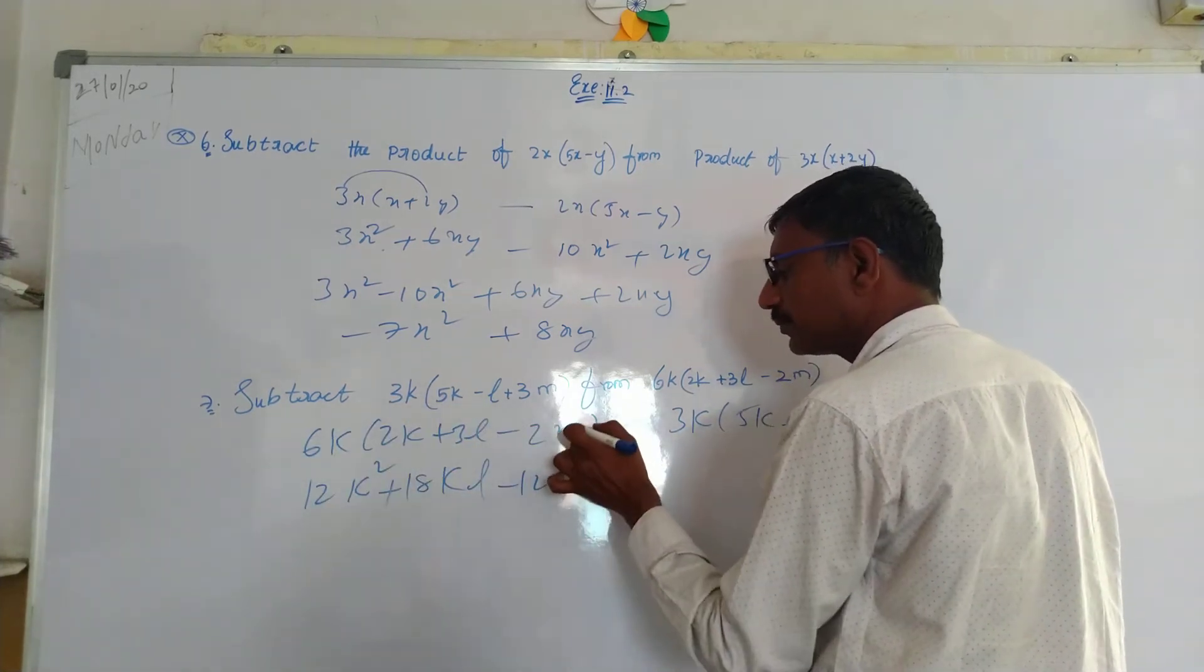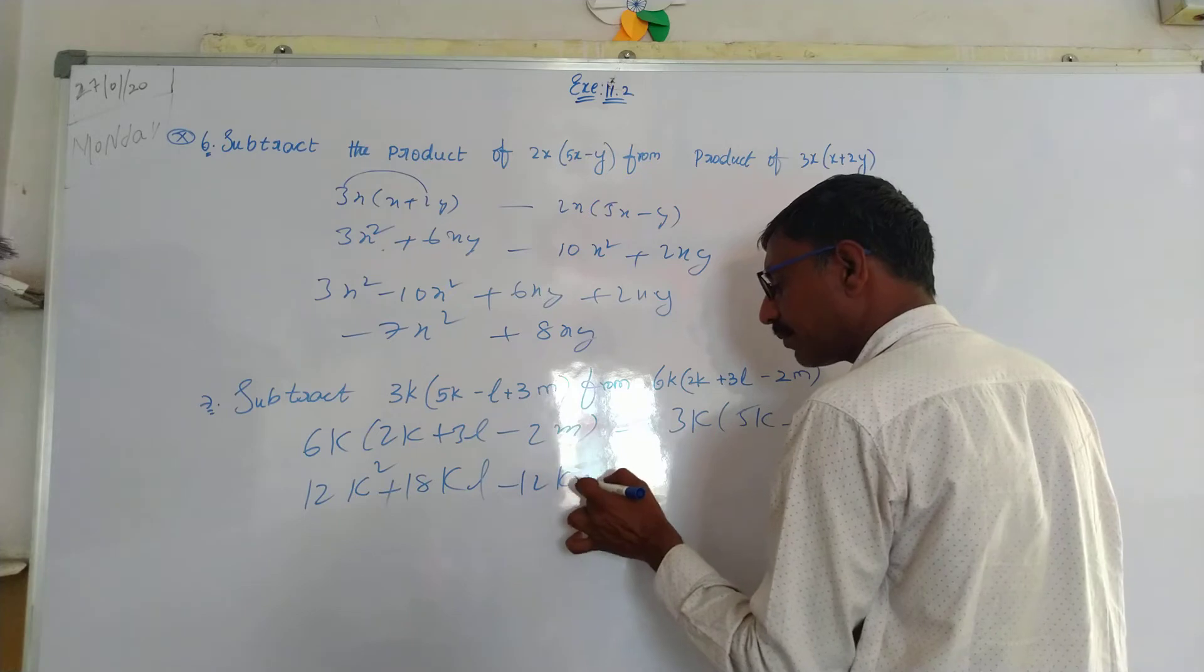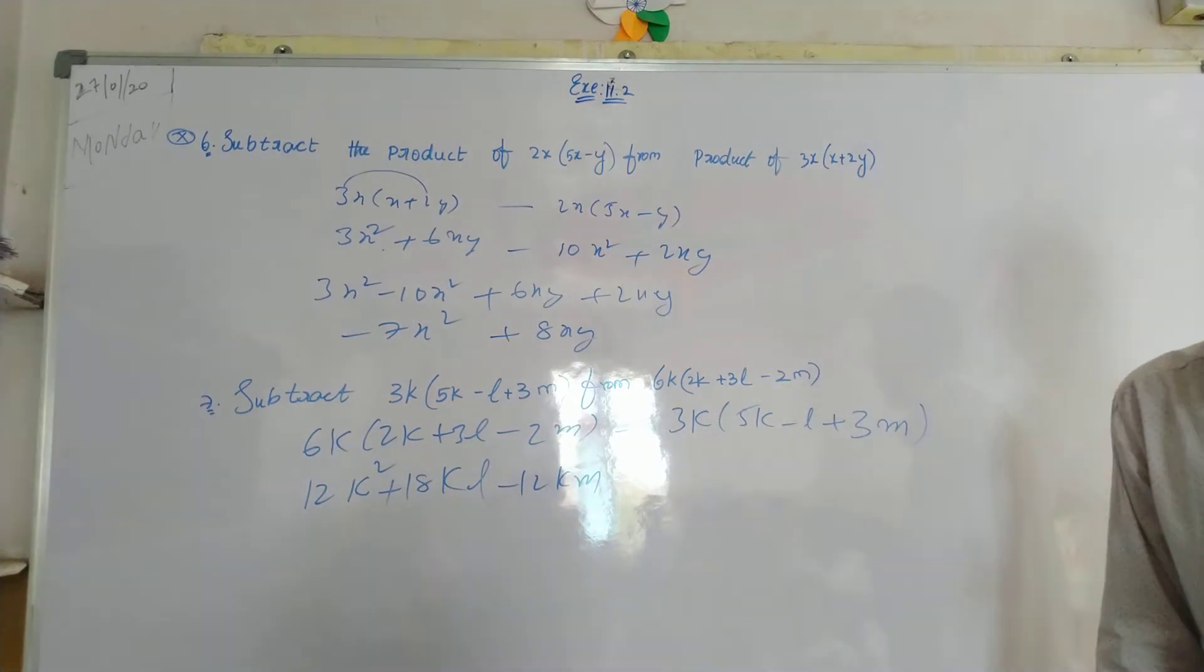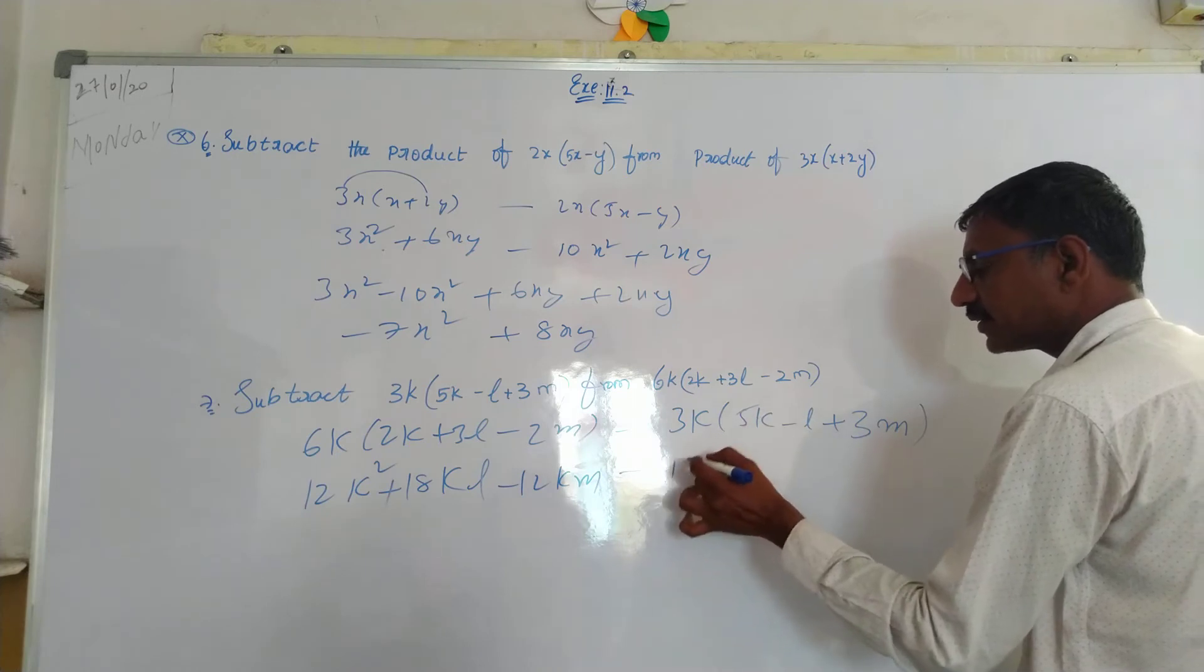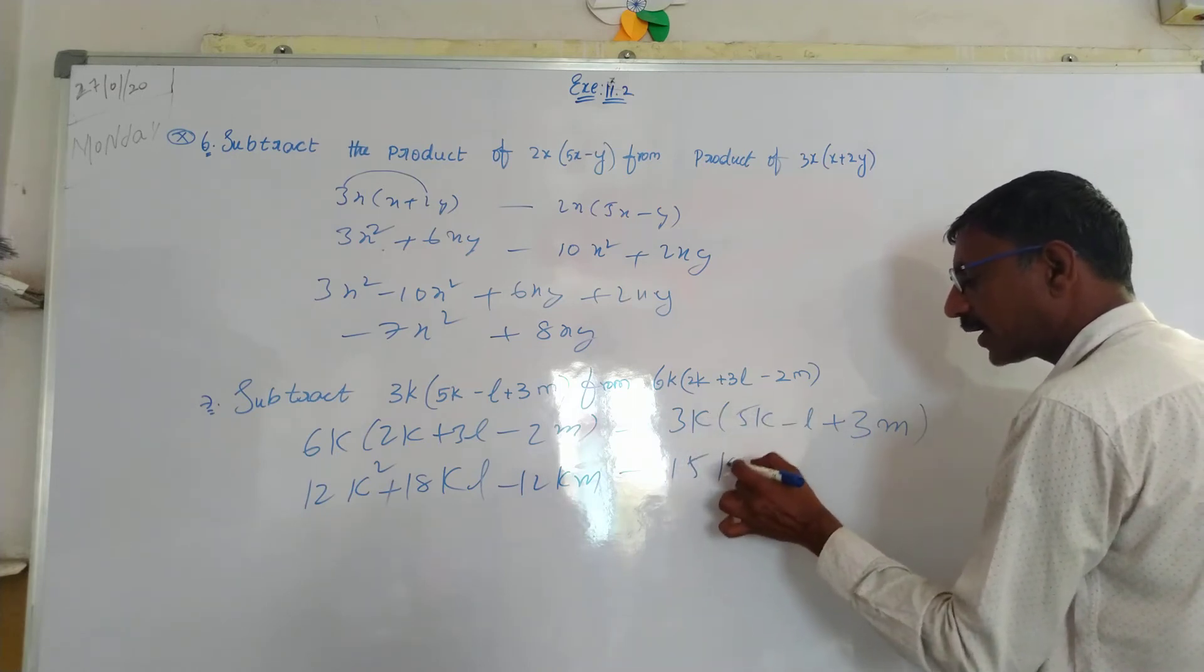12KM. Minus, 3 times 5 is 15, K into K is K square.